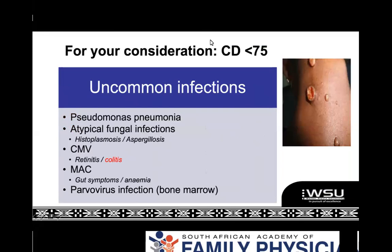If the CD4 count is under 75, there are some very weird things to watch for. It's not possible to know the full scope of everything someone can get with a very low CD4. You need a high index of suspicion. If a rash is unrecognizable or not responding to treatment, get a specialist involved — they might have pseudomonas pneumonia, strange systemic fungal infections like histoplasmosis or aspergillosis, CMV retinitis, CMV colitis, mycobacterium avium complex with an abdominal picture and anemia, non-tuberculous mycobacteria, or parvovirus of the bone marrow.